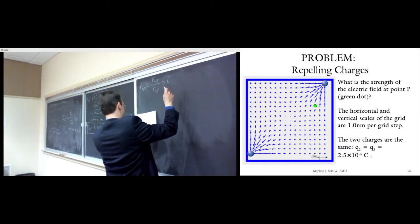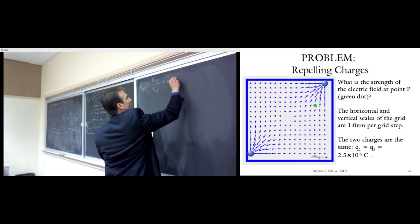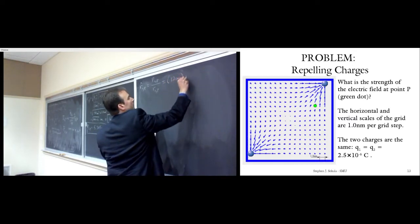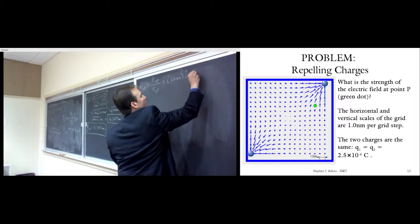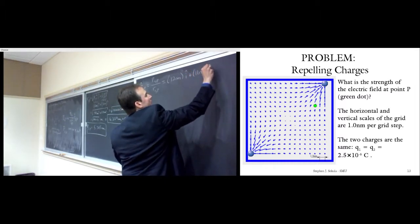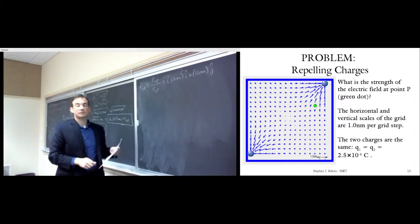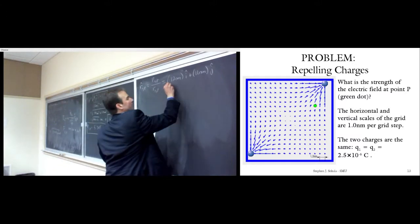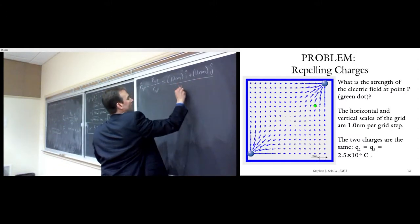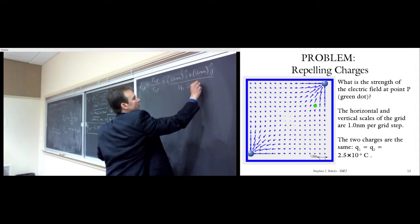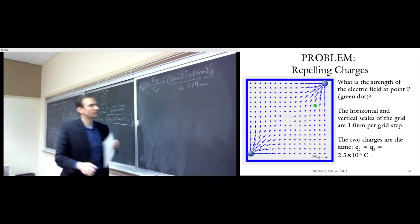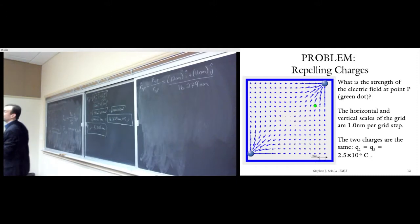Now that we have a final answer, how do you envision that on the diagram? Let's focus on point P. The x-axis origin was up and to the right of point P. We've calculated a total electric field in the positive x direction and a component in the positive y direction. The total of those will point diagonally — up and to the right from point P.